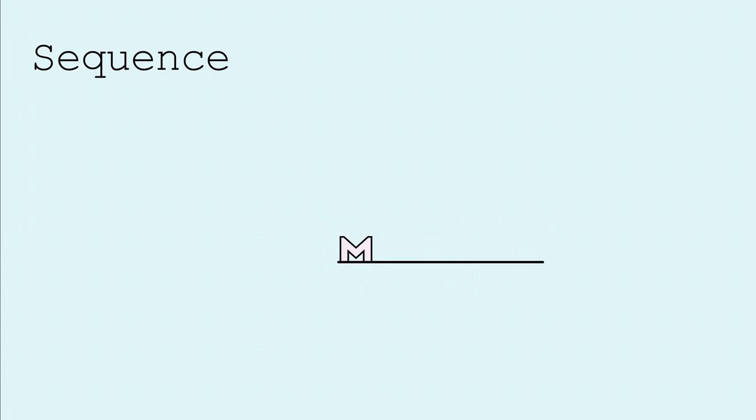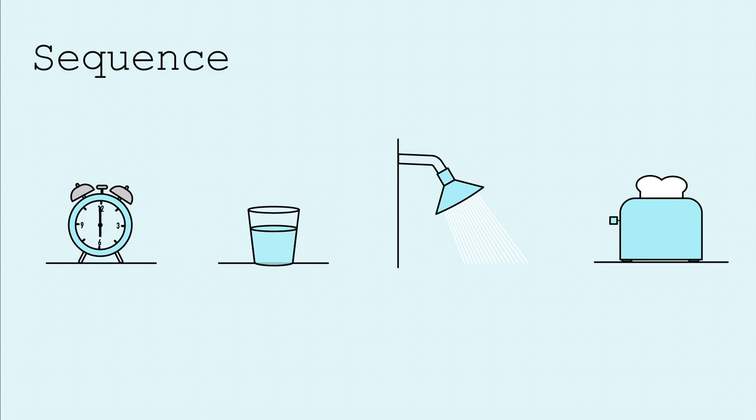A sequence we do every day is a morning routine. You might wake up, drink some water, take a shower, eat breakfast, and so on. Everyone's routine is different, but they're all made up of a sequence of various actions.